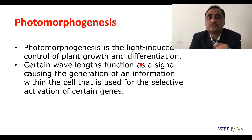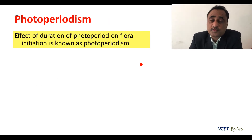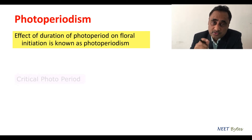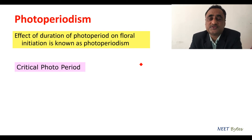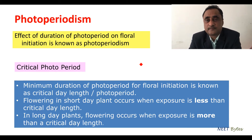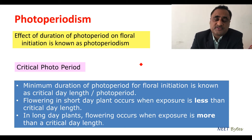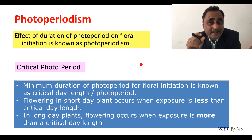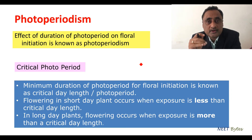Let's talk about photoperiodism first. What is photoperiodism? The very effect of light, or the duration of light, on the floral initiation of flowering is known as photoperiodism. In order to understand this, we first need to know what exactly a critical photoperiod is. The critical photoperiod is that minimum duration of light that is required to induce the flowering process.